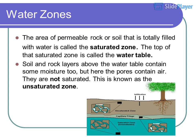Water zones: the area of permeable rock or soil that is totally filled with water is called the saturated zone. The top of that saturated zone is called the water table. Soil and rock layers above the water table contain some moisture too, but here the pores contain air and are not saturated — this is known as the unsaturated zone.